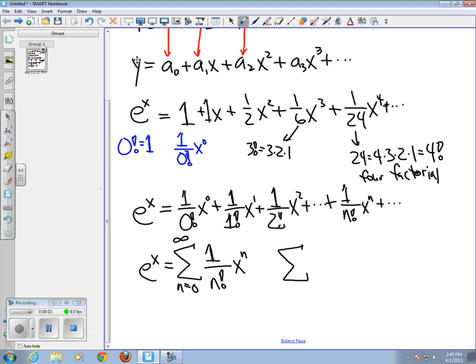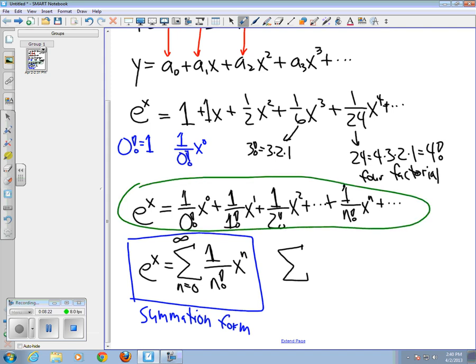So, this is what we call the summation form of the series for e to the x. When we write out a bunch of terms, like I've been doing so far, something like this, that I'm circling in green, this would be what I would call the expanded form. And it's convenient sometimes to work in summation form, but sometimes it's a little more illuminating to work in expanded form. So, we'll use whichever form seems more advantageous for what we're doing at the time.